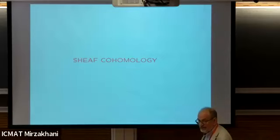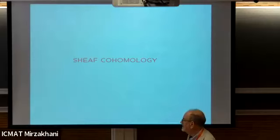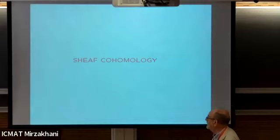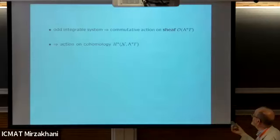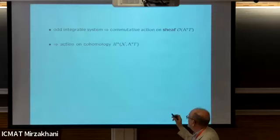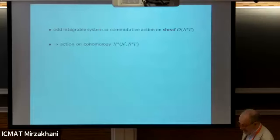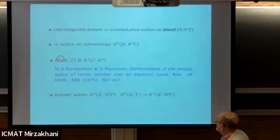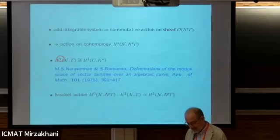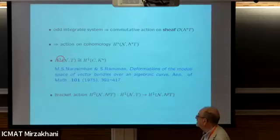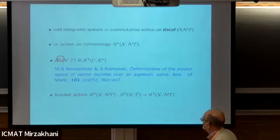Setting aside the supergeometry, I wanted to find out what other contexts one could put these polyvector fields in. In particular, the fact that we have an action of this commutative group on this sheaf. Since the odd integrable system gives us this commutative action on the sheaf, why not look at the action on the cohomology? This is the tangential cohomology - the cohomology of the sheaf of sections of the exterior algebra of the tangent. The underlying question of this talk is: what do we know about this space? We know all about the ordinary cohomology, the Chern classes, and so on. What about this kind of cohomology? As far as I could see, very little.